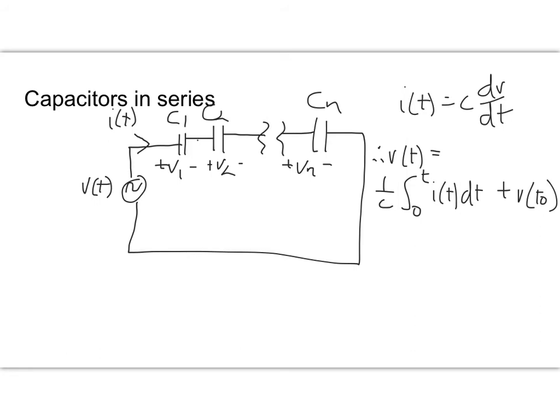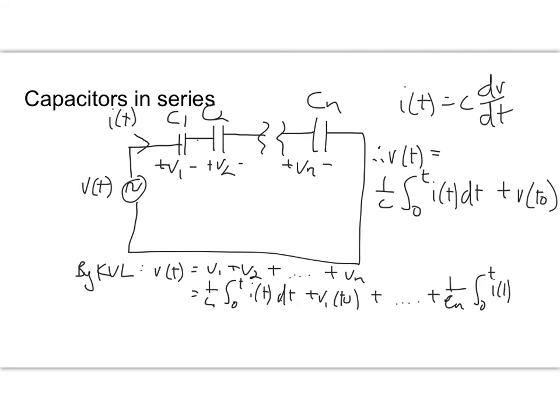And we know by Kirchhoff's voltage law, we know that V of T is equal to V1 plus V2 plus and so on, up to plus Vn, and that is equal to 1 upon C1 times the integral from 0 to T of I of T dt, plus Vn the integral from 0 to T of I of T dt plus Vn at time T nought.